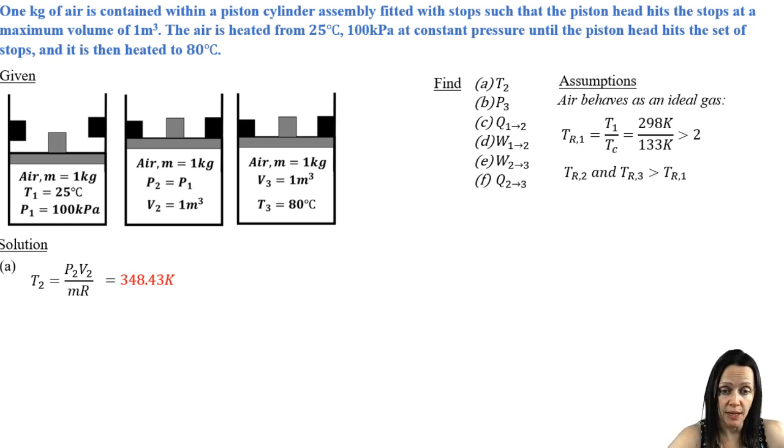Then I can do the same thing for the pressure at three. Apply my ideal gas law at three, plug and chug. I've got all those variables and I calculate my answer in kilopascals.